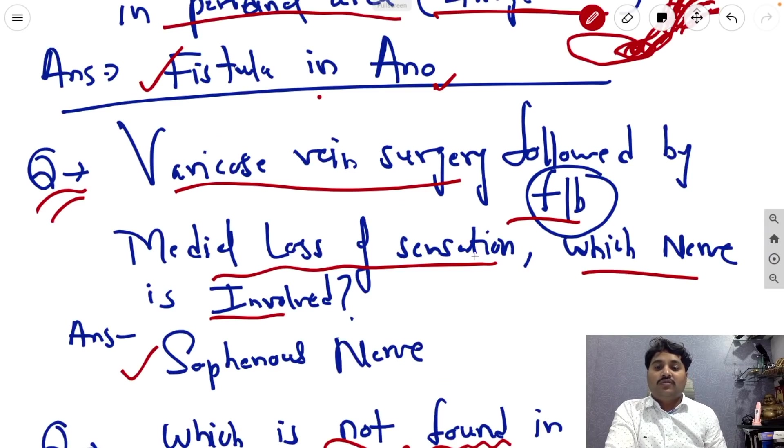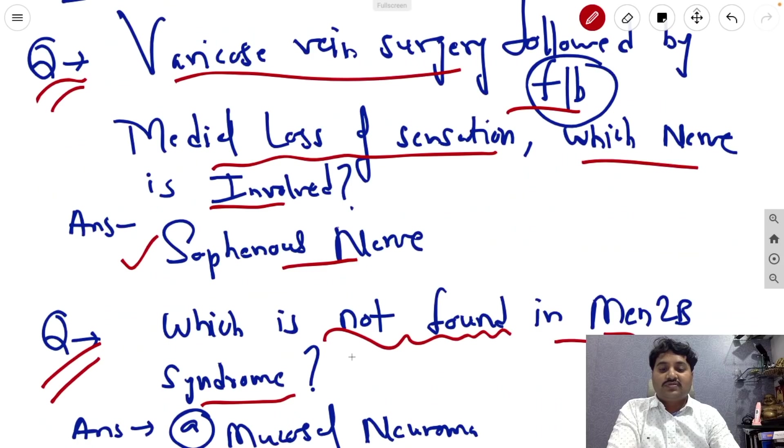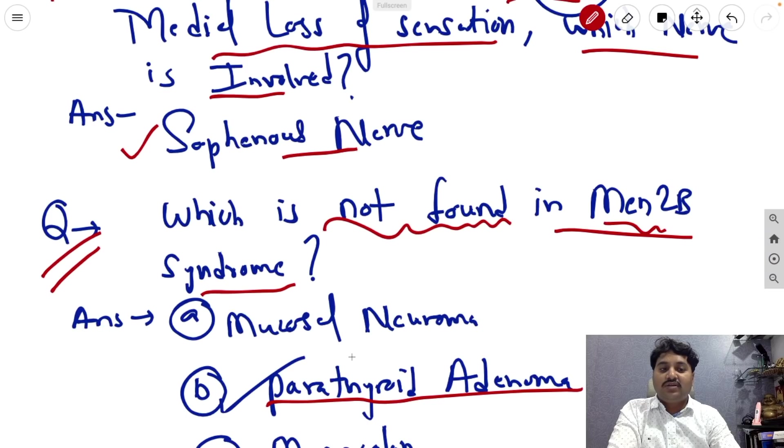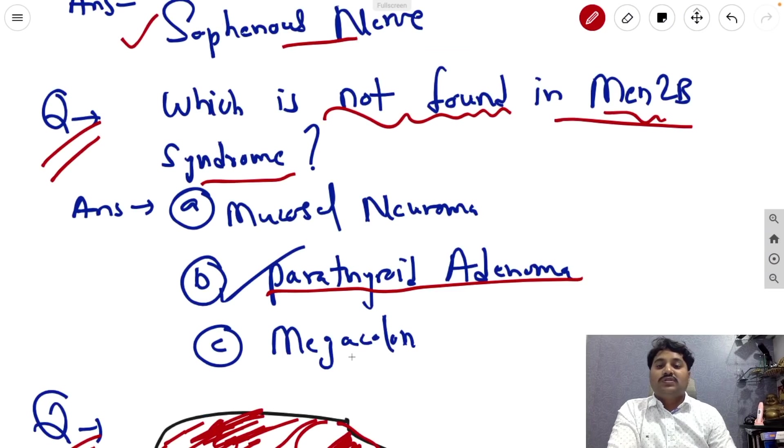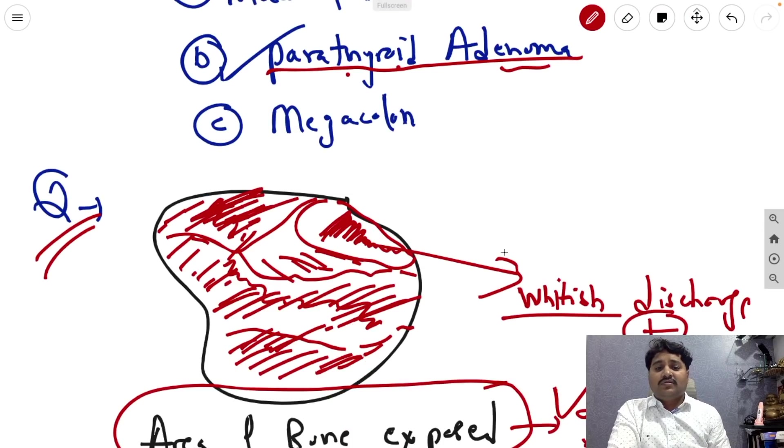Next question is varicose vein surgery followed by medial loss of sensation. Which nerve is involved? Answer is saphenous nerve. Next question is which is not found in MEN syndrome? The answer is parathyroid adenoma.